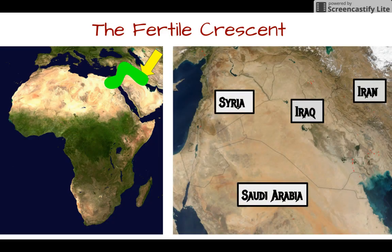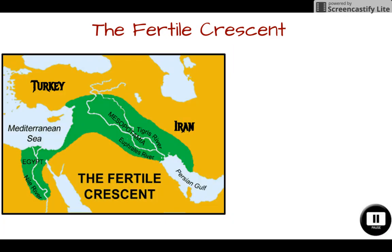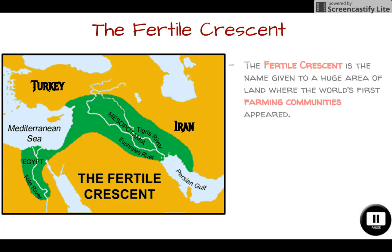If we zoomed in on that map, you would see modern-day countries like Syria, Iraq, Iran, and Saudi Arabia, and this giant arc of very fertile land where the first farming communities developed. The Fertile Crescent is a huge area of land that extends across two continents — Asia and Africa — and this is where the world's first farming communities appeared.